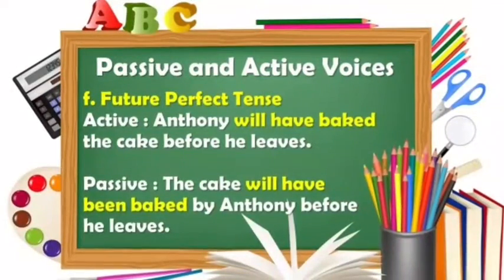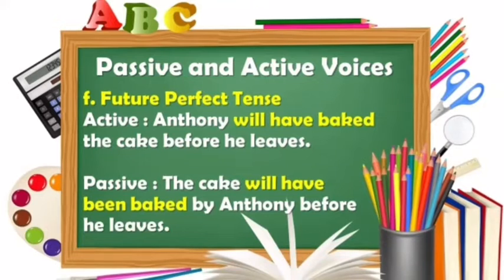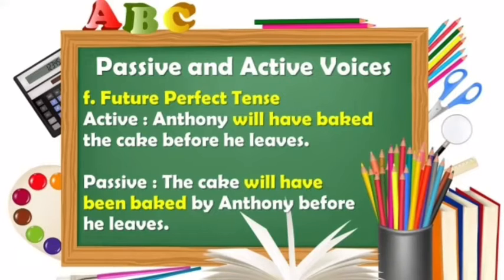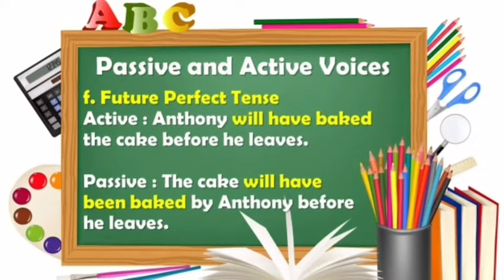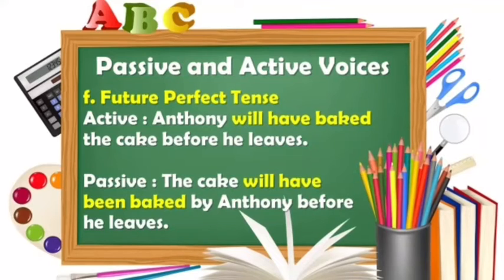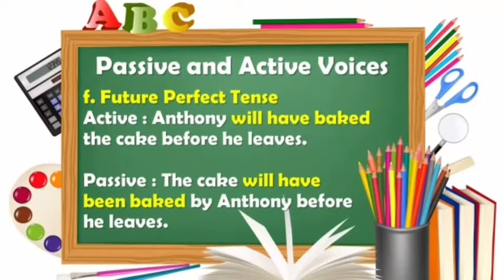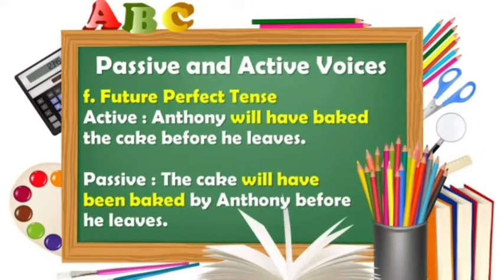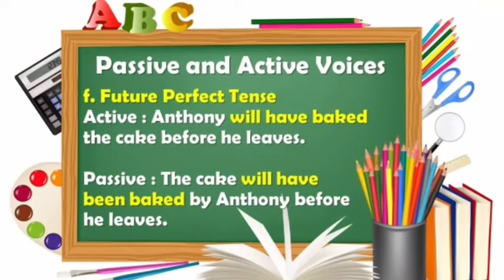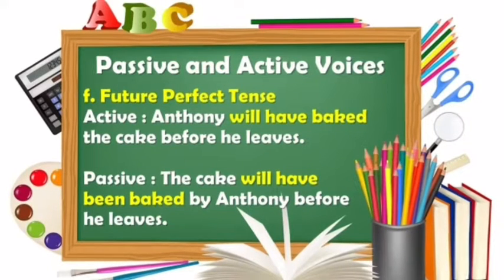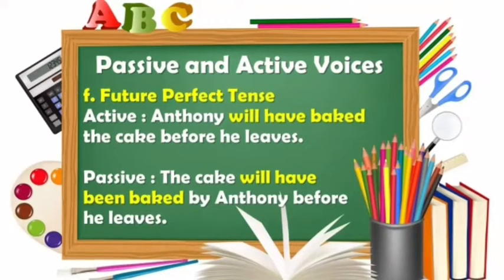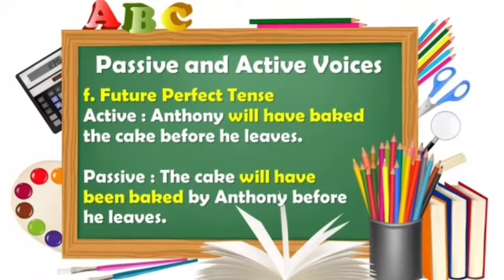The last one is future perfect tense. In active voice: 'Anthony will have baked the cake before he leaves.' Anthony is the subject, will have baked is the action, and the cake is the object. In passive voice: 'The cake will have been baked by Anthony before he leaves.' The object is the cake, the action is will have been baked, and the subject is Anthony, introduced by the preposition 'by.'